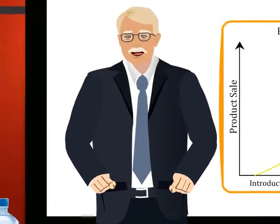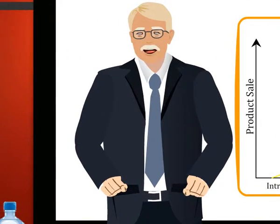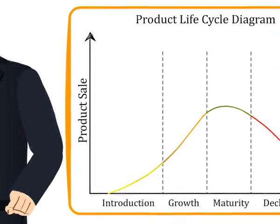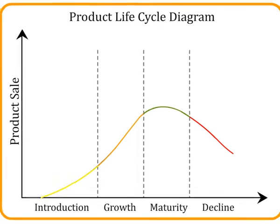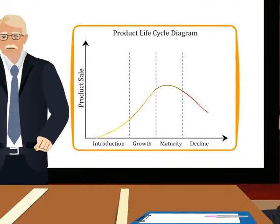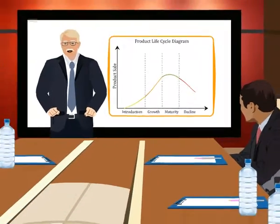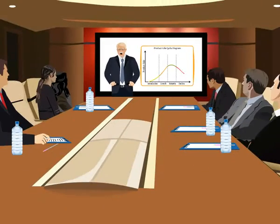For example, the product may be changed if it is being rejuvenated, or left unchanged if it is being harvested or liquidated. The price may be maintained if the product is harvested, or reduced drastically if liquidated. So this was all about the product life cycle. Thank you.